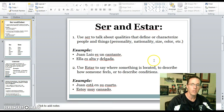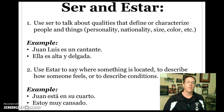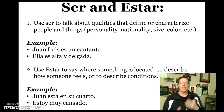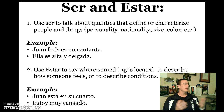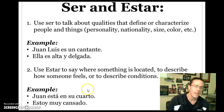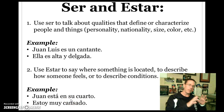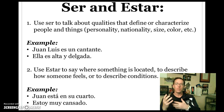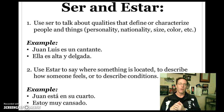Let's take a look at some grammar for this week. We have four slides of some new information. Ser and estar: use ser to talk about qualities that define or characterize people and things — personality, national origin, size, color, etc. Ser is for intrinsic characteristics. For example, Juan Luis es un cantante — Juan Luis is a singer. Ella es alta y delgada — she is tall and slender. Use estar to say where something is located or to describe feelings, emotions, and conditions. Juan está en su cuarto — Juan is in his room. Estoy muy cansado — I am very tired. Ser is for more permanent characteristics, whereas estar tends to be for more temporal or changeable things, including locations.